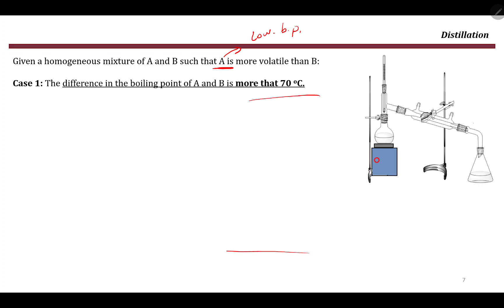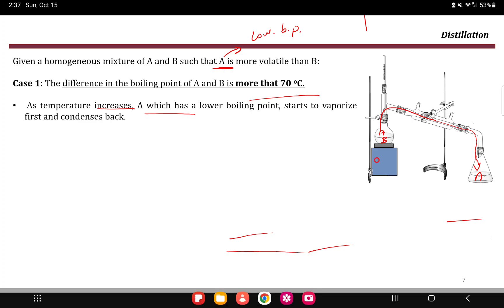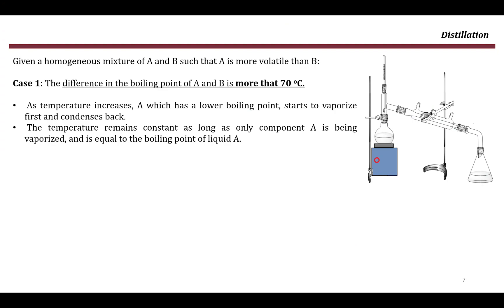If the difference in boiling points is more than 70 degrees, upon distillation, as temperature increases, A — which has the lower boiling point — will evaporate first and move through the condenser to be collected. As long as only A is moving up, the temperature recorded by the thermometer will remain constant and equal to the boiling point of A. Once A is fully evaporated, the temperature will start to increase because B is beginning to evaporate.